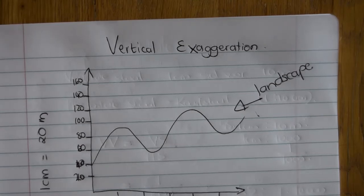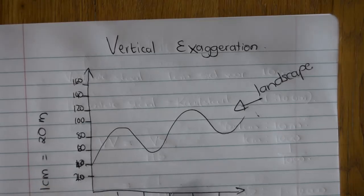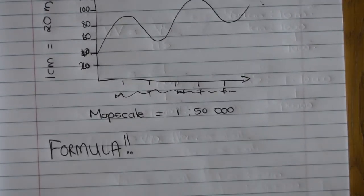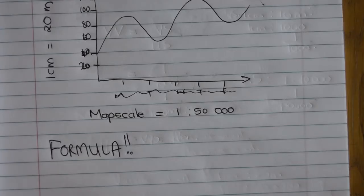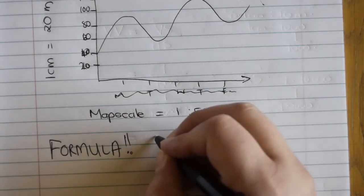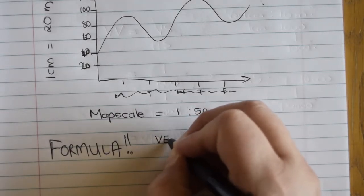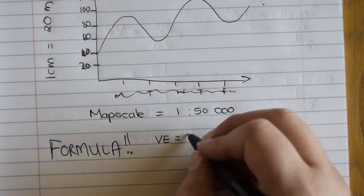Vertical exaggeration is the amount of times that the vertical scale of a drawing is greater than the horizontal scale. The formula is extremely important — if you have the formula memorized and know how to use it, you are well on your way to getting this. It's one of the easiest questions to do. The formula is: vertical exaggeration equals the vertical scale divided by the horizontal scale.